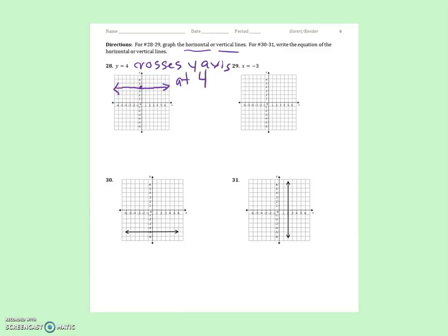You can conclude what number 29 is going to be. Let's do number 30. This time it gives you the graph, you write the equation. Well, which axis does it cross? It crosses the y-axis. So it becomes y equals, crosses at negative 5. Y equals negative 5. And then you can assume what number 31 will be. You can do those on your own.